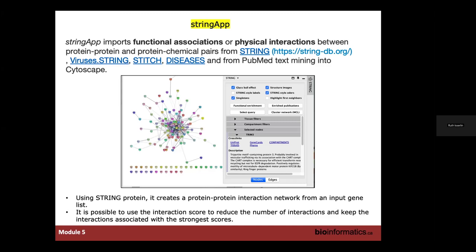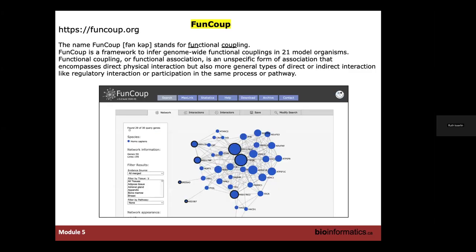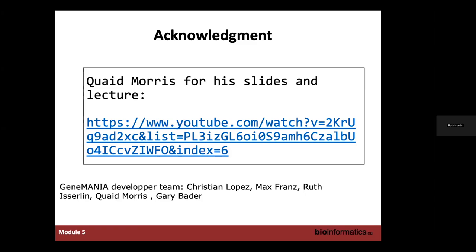Another similar tool is FunCoup, which stands for functional coupling. It's a web app that brings in multiple networks, and interestingly contains cell-type-specific data so you can pull in information related to specific cell types. GeneMANIA was originally developed by Quade Morris at the Donnelly Centre, now at Sloan Kettering Institute. The Bader lab has been hosting and updating GeneMANIA for many years and has a development team as well.